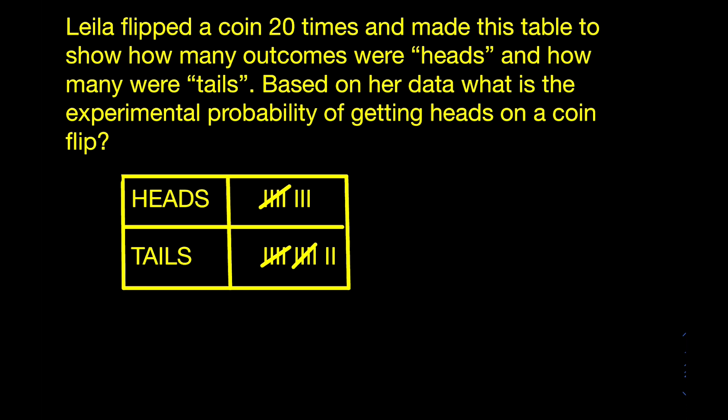Leila flipped a coin 20 times and made this table to show how many outcomes were heads and how many were tails. Based on her data, what is the experimental probability of getting heads on a coin flip?